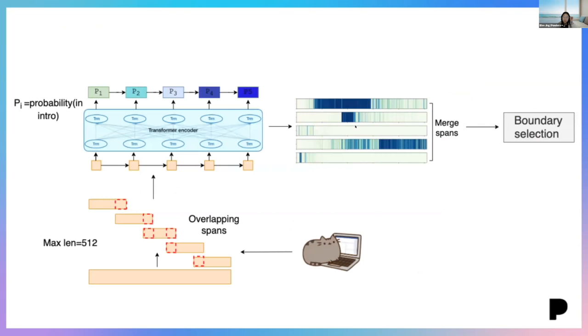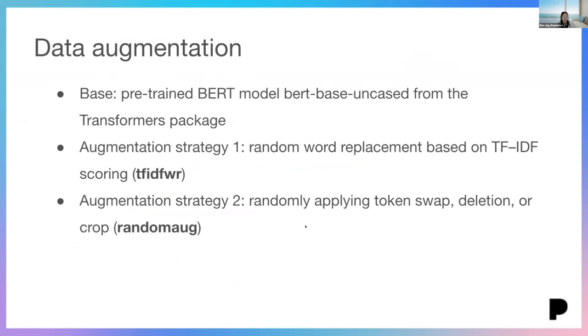And this diagram shows our whole pipeline. So we begin by having people annotate the episodes manually. Then we break down the transcripts into spans and feed them into the transformer model. Then we re-merge the spans and do the boundary selection. And these are some more details about our data augmentation techniques. So the base model is the pre-trained BERT. And the first data augmentation strategy is the random word replacement based on TF-IDF scoring. So we will replace only the relatively unimportant words. The other augmentation strategy is randomly applying token swap deletion or crop.